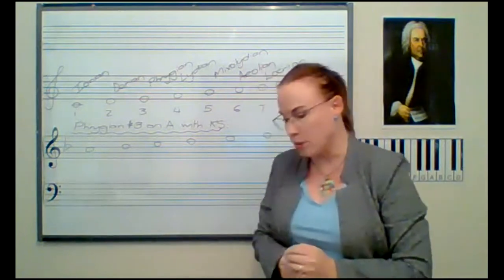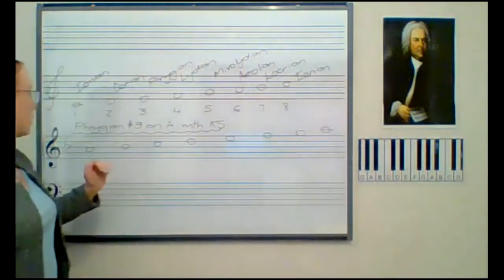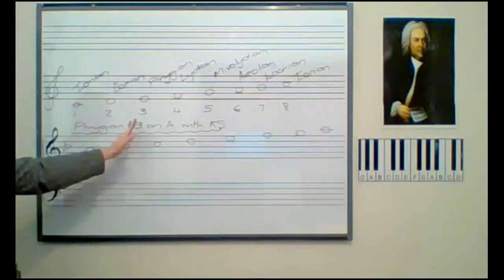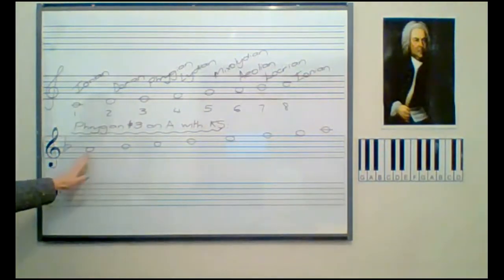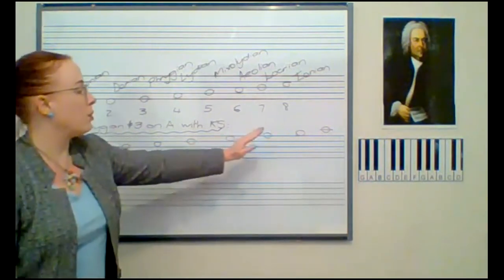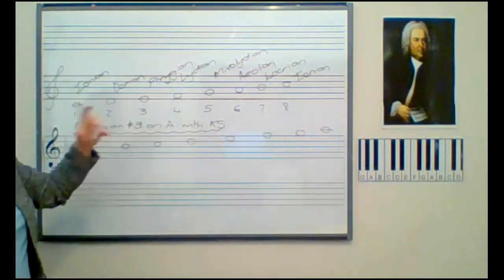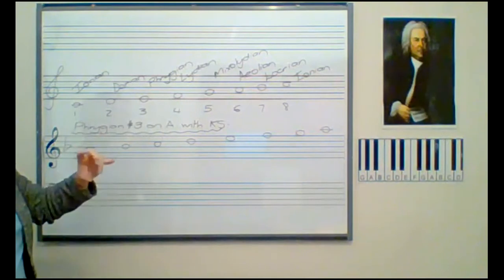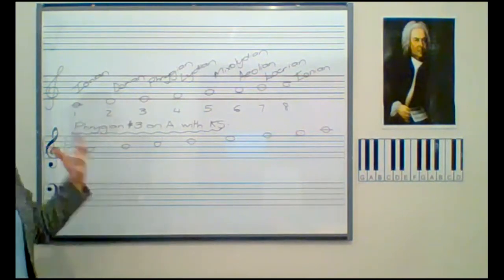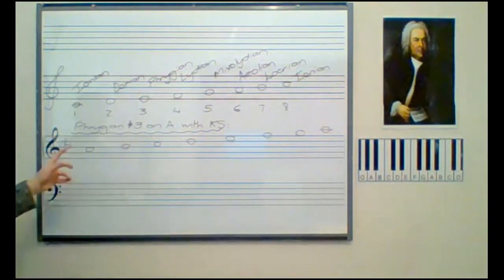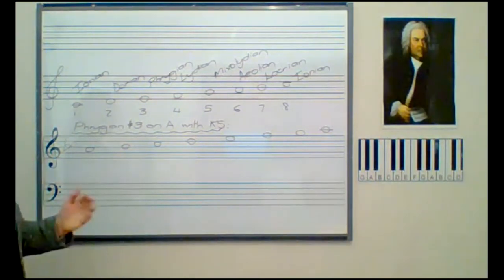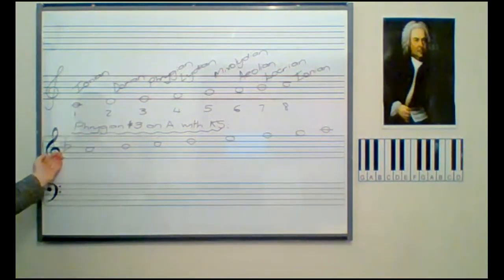Now look at this example on the board. So I wrote this out. So the Phrygian sharp 3 on A with key signature. So I started on A. And because I know the Phrygian starts on the third scale degree of my major, which is F major, I also know the relative minor is D minor. And I know the key signature for both F major and D minor is B flat. So it's with key signature, so I've got my B flat there.